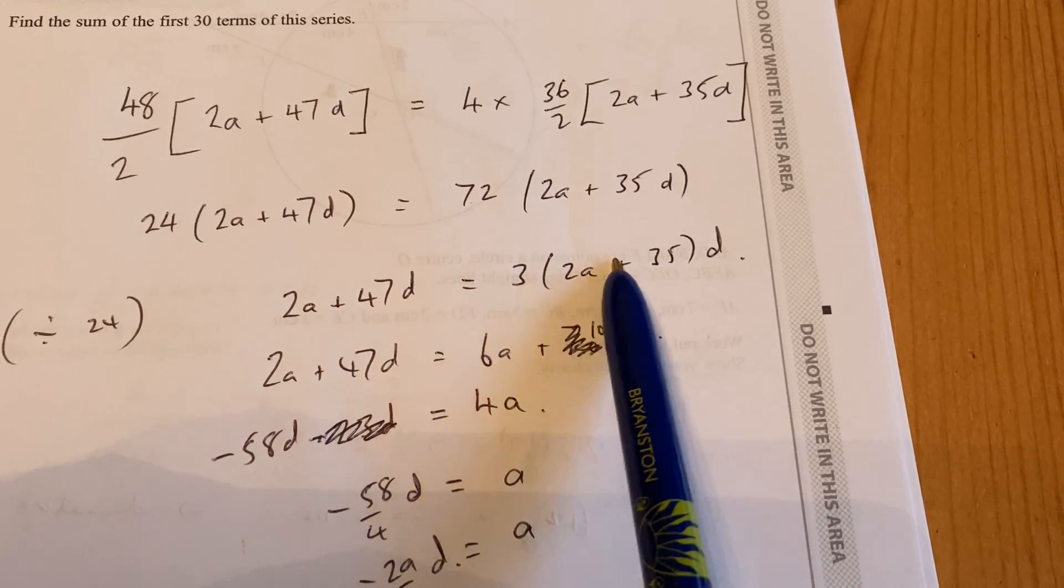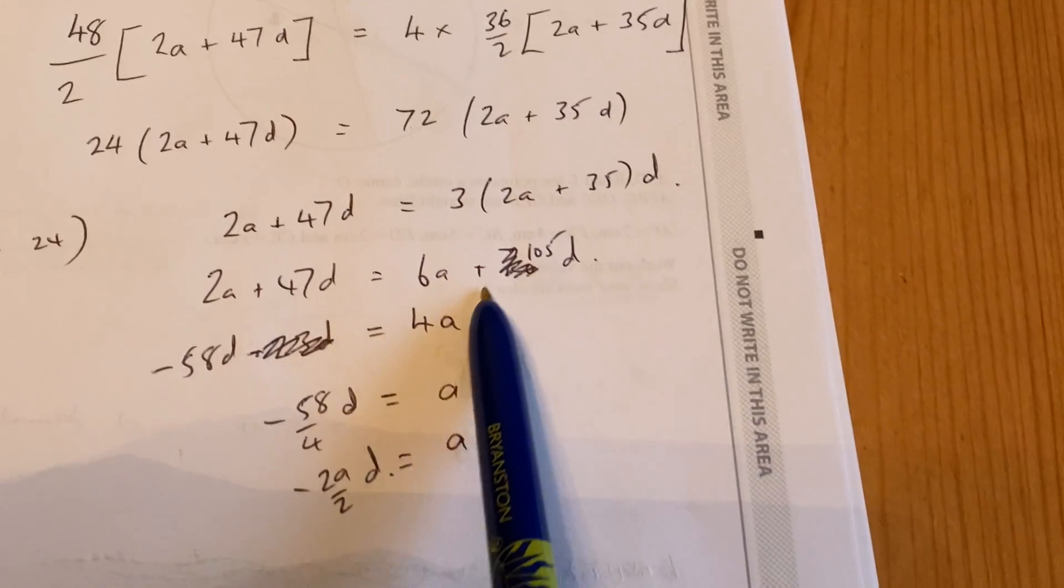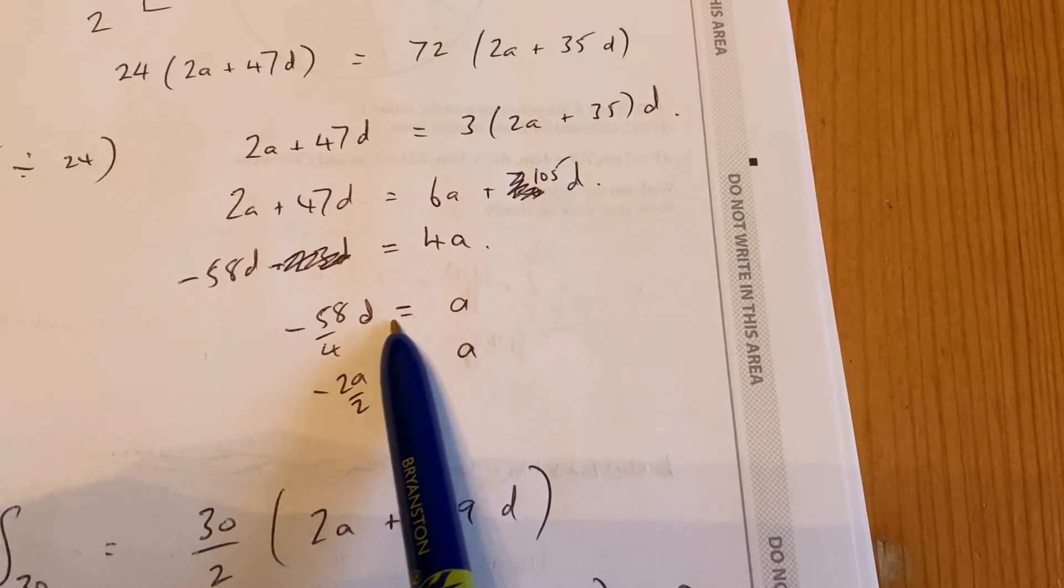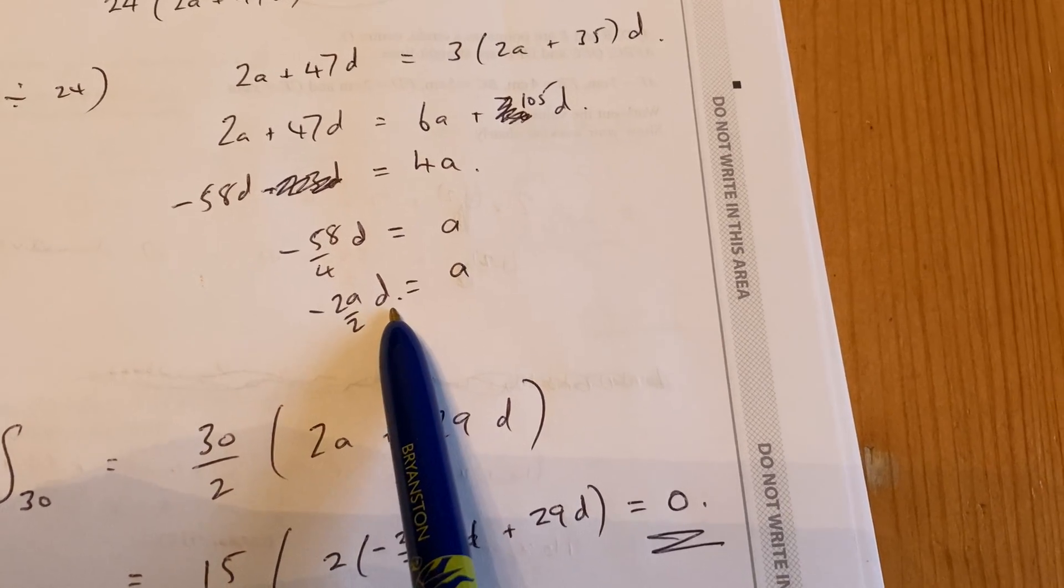Bringing the formula down, multiplying out the brackets, simplifying the formula or the equation, gives us, finally, that we can say that a is minus 29 over 2d.